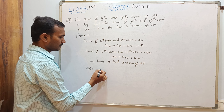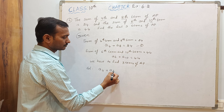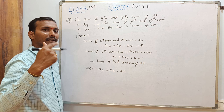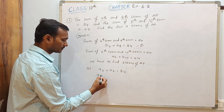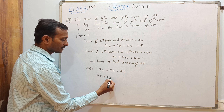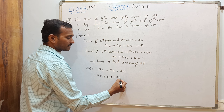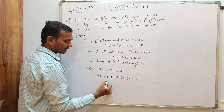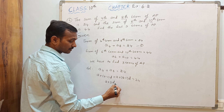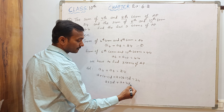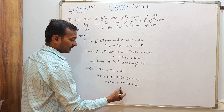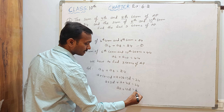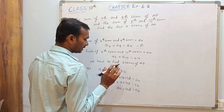Take the first equation: A4 plus A8 equals 24. A4 is nothing but A plus (4 minus 1) into D, and A8 is A plus (8 minus 1) into D. That gives us A plus 3D plus A plus 7D equals 24, which simplifies to 2A plus 10D equals 24. This is equation number 3.